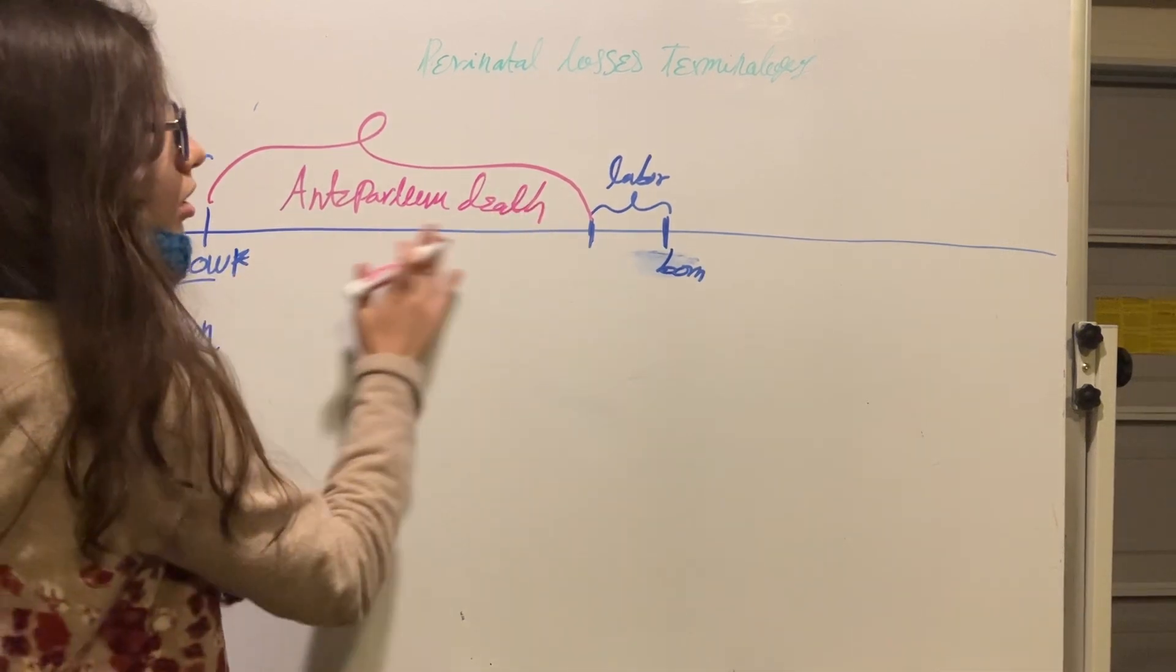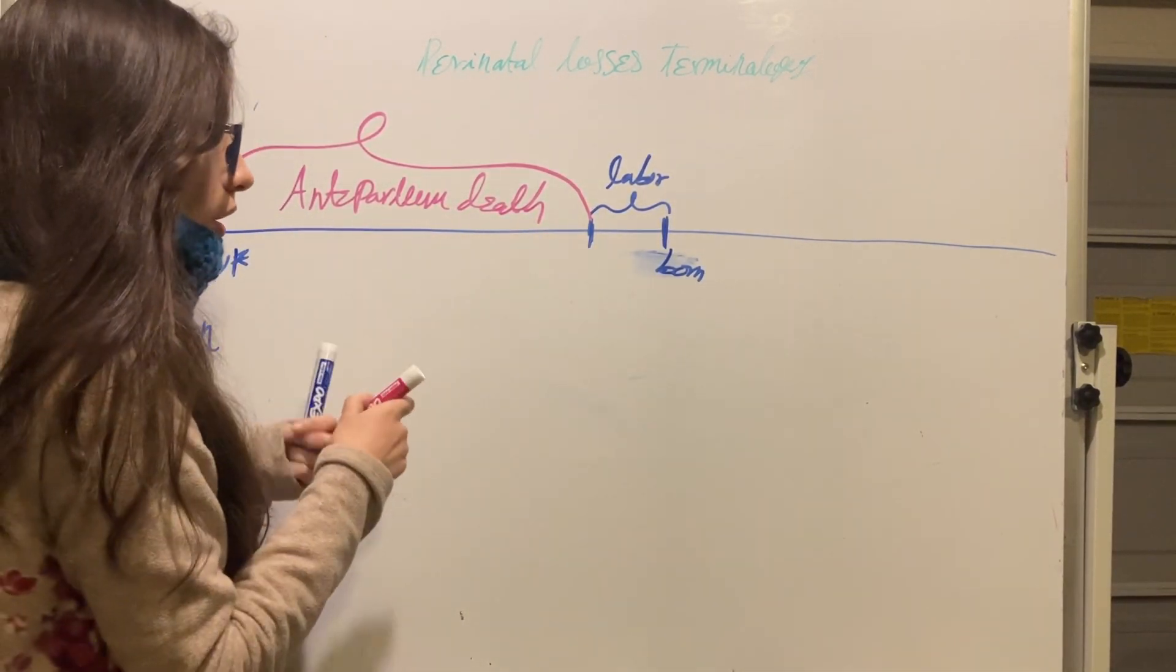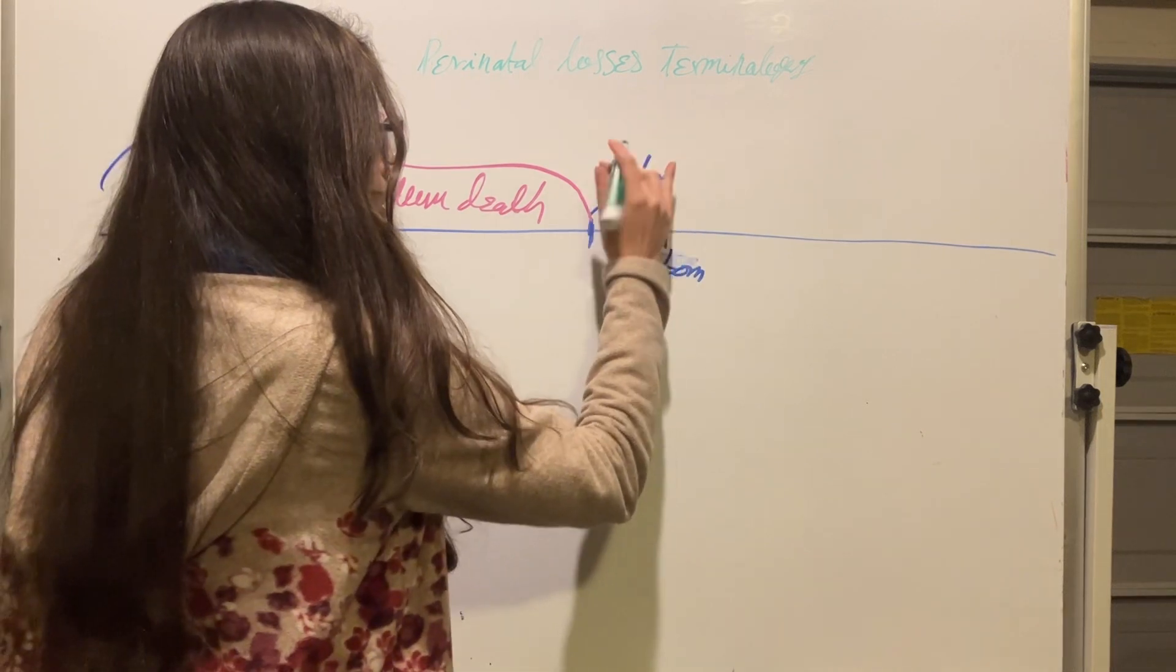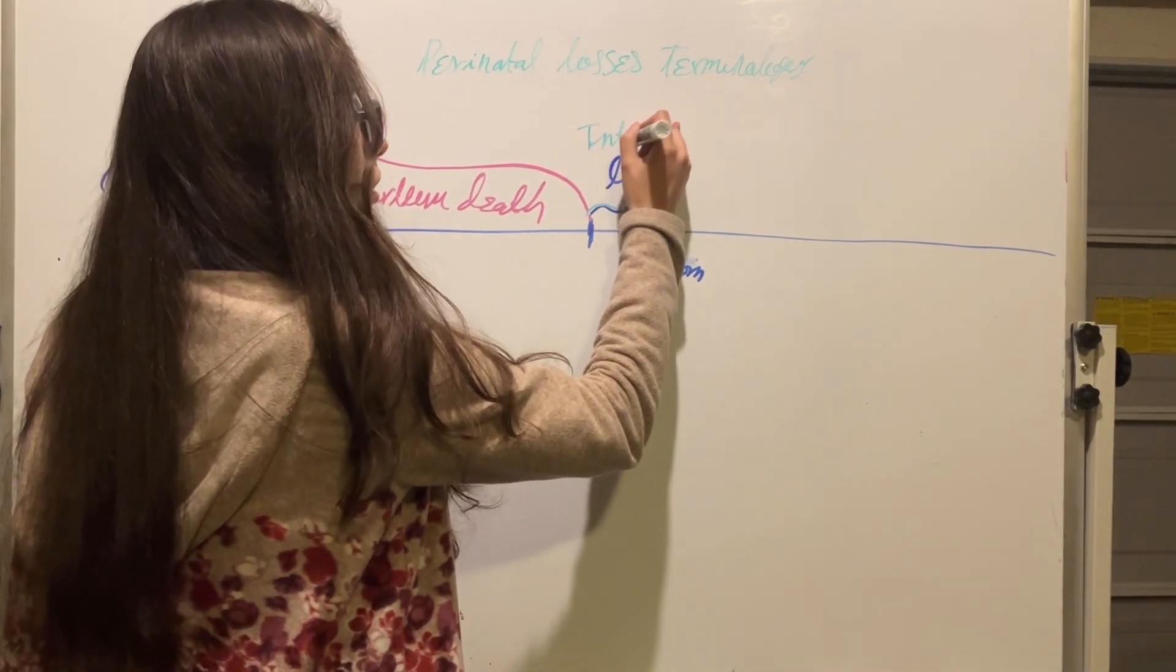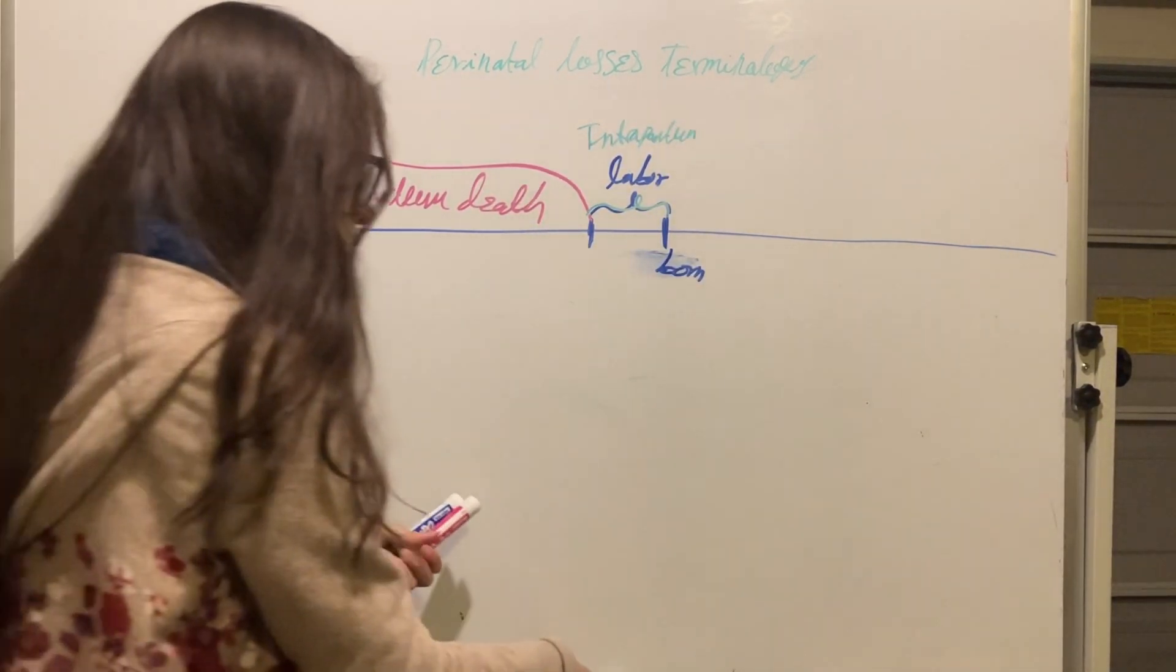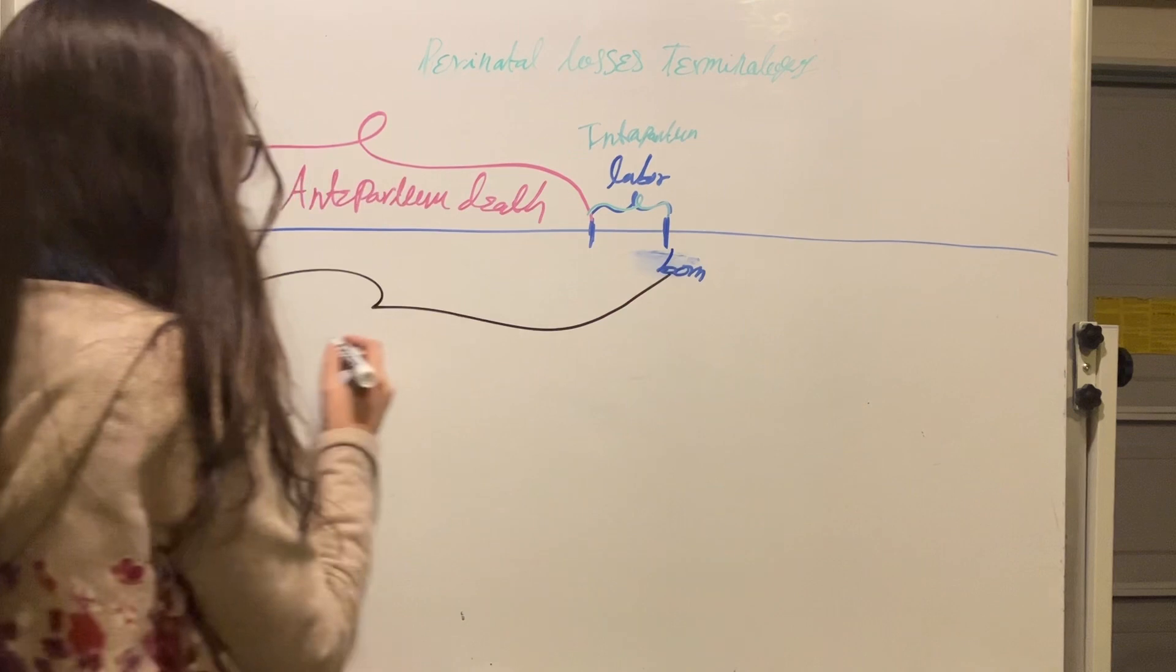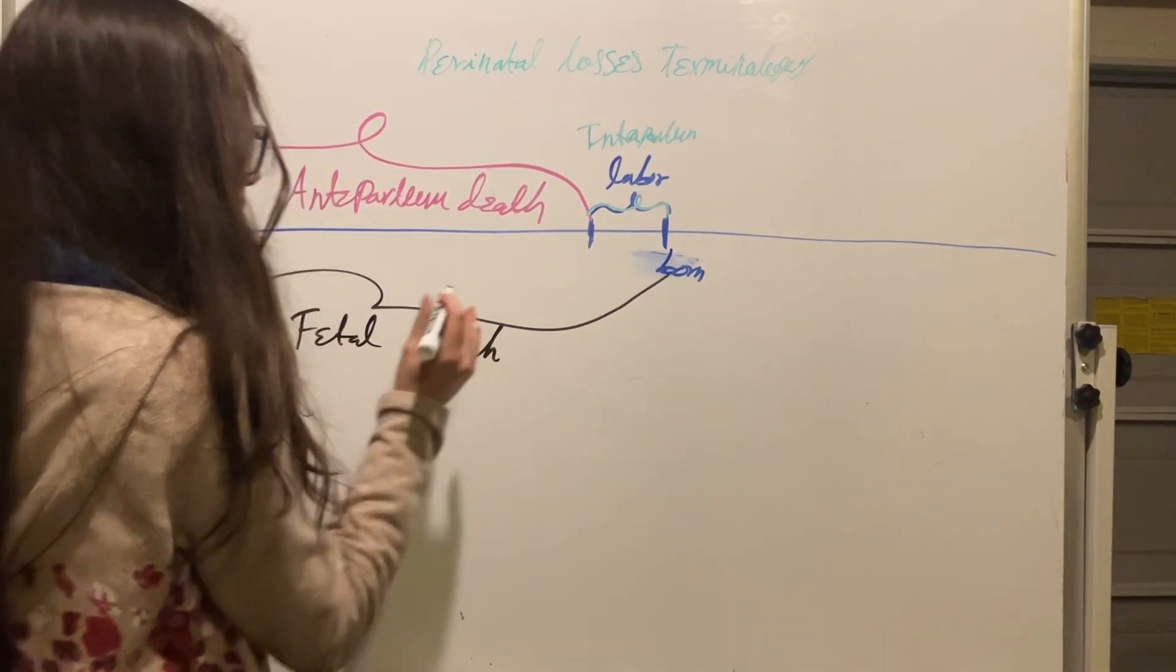If we have death of the fetus during labor, this is intrapartum death. And the combination of antepartum death and intrapartum death, this is called fetal death.